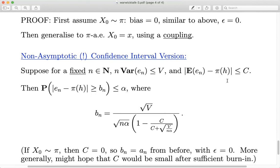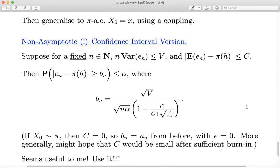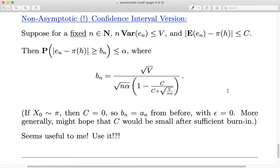If you have a bounded functional h, then the bias can never exceed the maximum minus minimum value of h, giving an automatic bound on C. So you don't need to prove anything additional in that case. In summary: whether you want an asymptotic bound without needing CLT or geometric ergodicity — just a variance bound — or a non-asymptotic version requiring both a variance bound and a bias bound, you get a conservative upper bound on MCMC accuracy assuming considerably less than a full CLT analysis, though the interval is about 2.3 times wider.